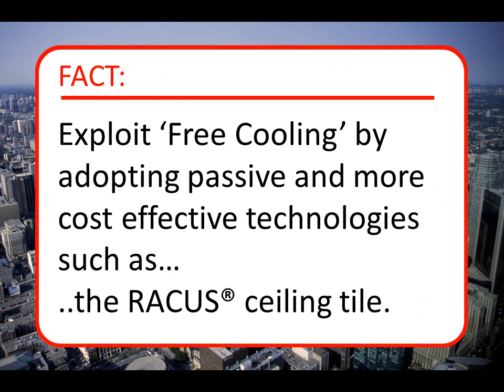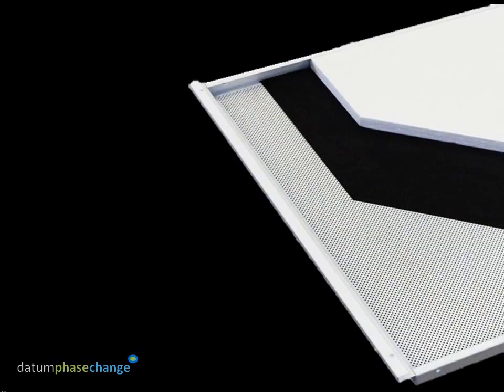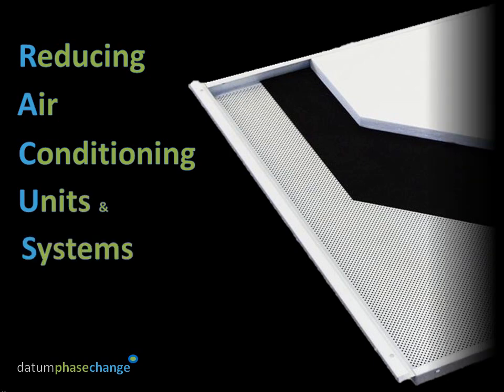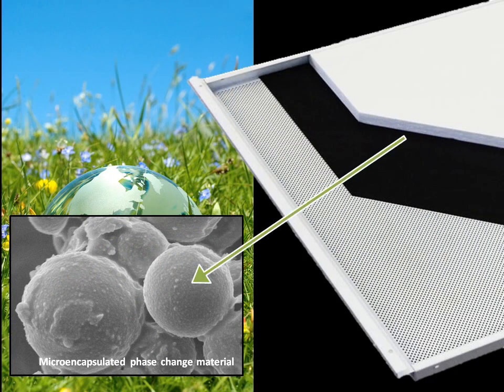Fact. There are increasing opportunities to exploit free cooling by adopting passive and more cost-effective technologies such as the RACUS ceiling tile. RACUS stands for Reducing Air Conditioning Units and Systems. The RACUS ceiling tile incorporates a bio-based phase change material which captures and stores excess heat gains from within the building, reducing the need for air conditioning.